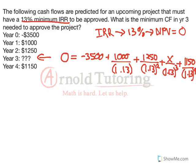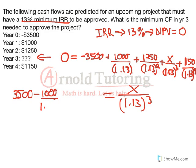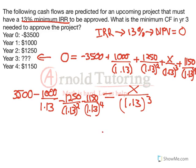Now we can see there's only one variable, with 0 on one side of the equation. We can calculate the rest of this in our calculator and move it to the other side. I'm going to leave x over 1.13 to the power of 3 on this side, and move everything else to the other side: 3,500 minus 1,000 over 1.13, minus 1,250 over 1.13 squared, minus 1,150 over 1.13 to the power of 4. Toss that all in the calculator, and we get 930.79.